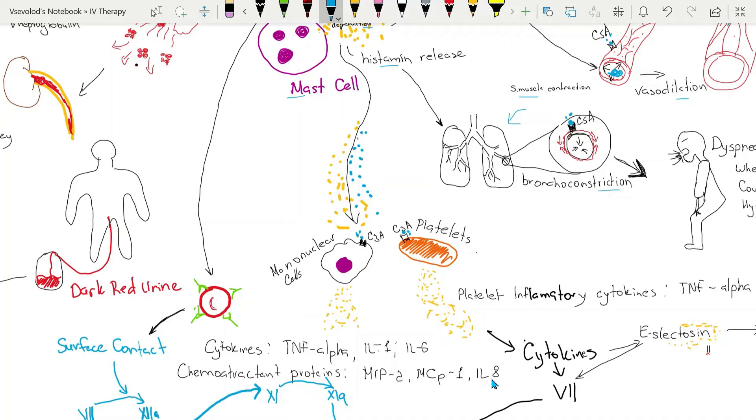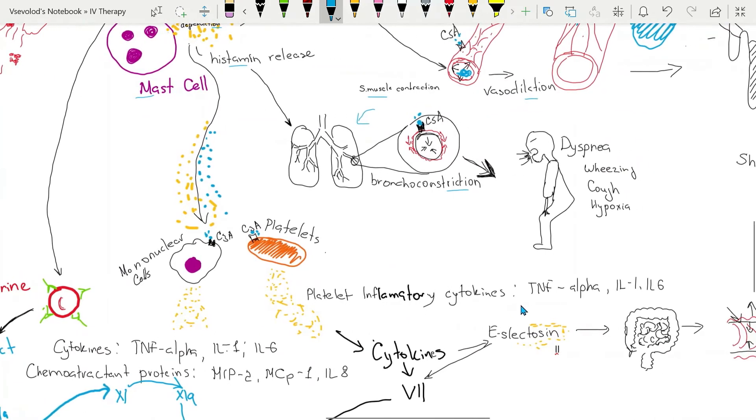Histamine and complement proteins will also activate platelets. Platelets in turn will release their cytokines: tumor necrosis factor alpha, interleukin 1, interleukin 6, and coagulation proteins will activate the coagulation pathways.